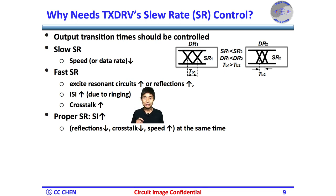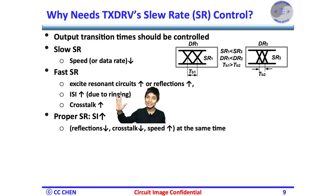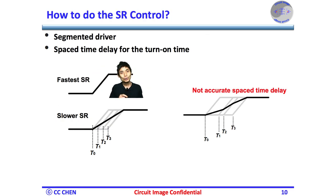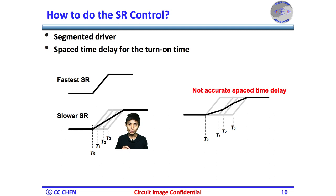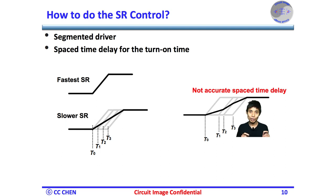Now we know why we need slew-rate control. How can we implement slew-rate control in the TX output driver? We could keep the driver's fast slew rate for the highest data rate. But for lower data rates, we could divide the driver into a few segments and turn them on with staggered time delays for the desired slew rate. The interpolated or slow slew rate is shown for reference. The staggered timing accuracy is critical to avoid any transition distortion. The delay can be controlled accurately by either a voltage-controlled delay line or a phase interpolator.